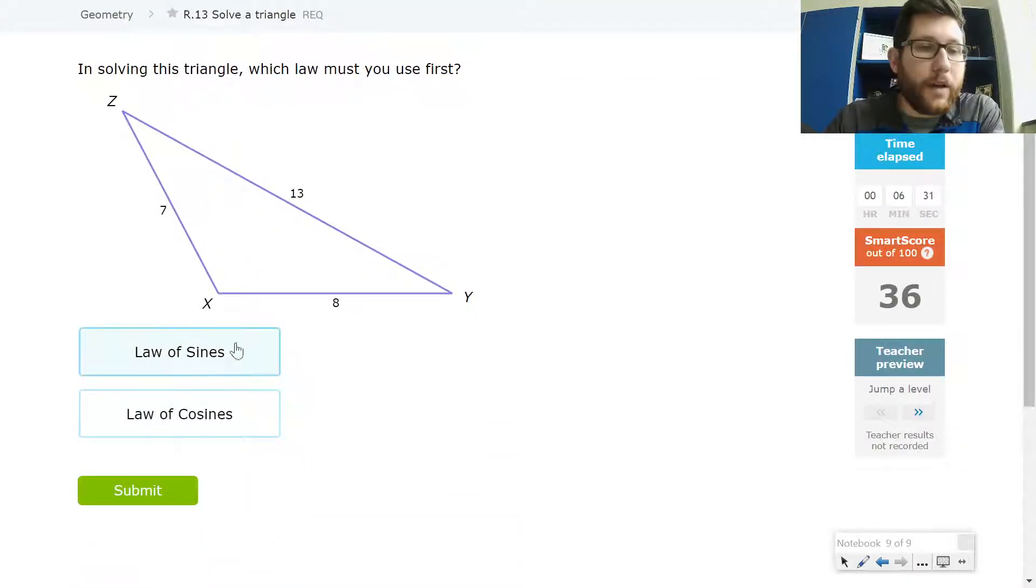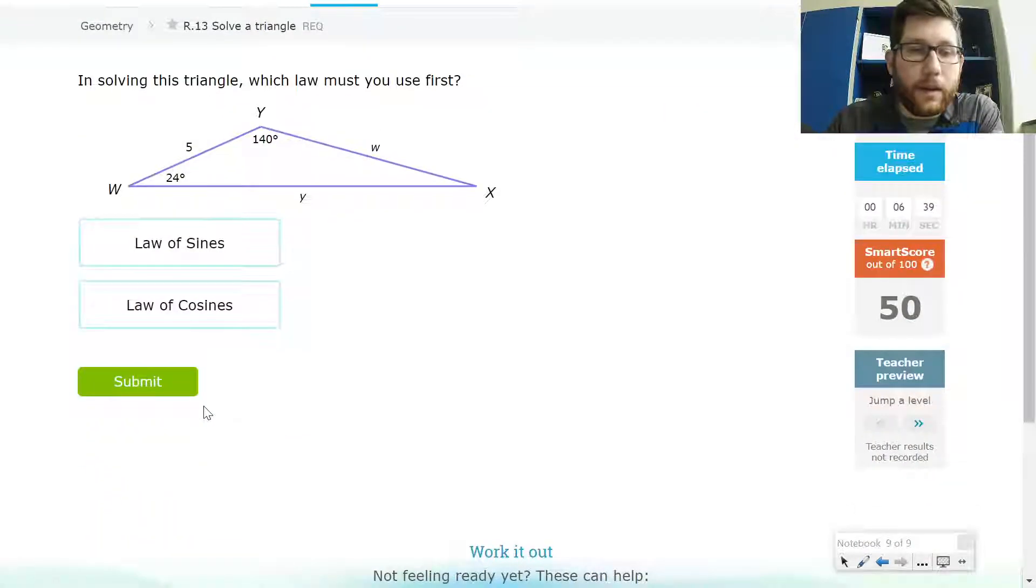Notice this one. I've got three sides, but I don't have any angles. There's no way I could use Law of Sines, so once again, I'm going to have to go with Law of Cosines here.